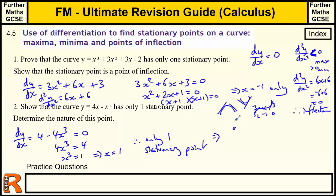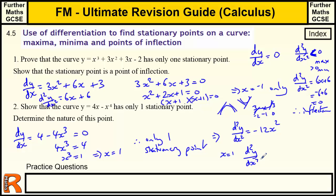To determine the nature of the stationary point, find the second derivative: d²y/dx² = -12x². When x = 1, d²y/dx² = -12, which is less than zero, therefore it's a maximum.